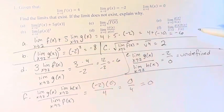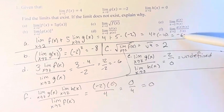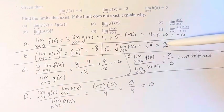So these limits are in order: negative 6, negative 8, 2, negative 6, undefined, and 0.